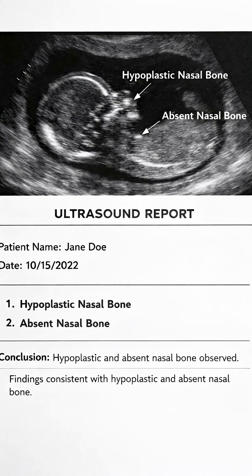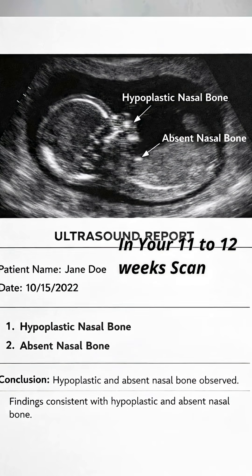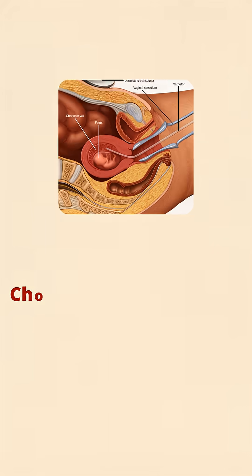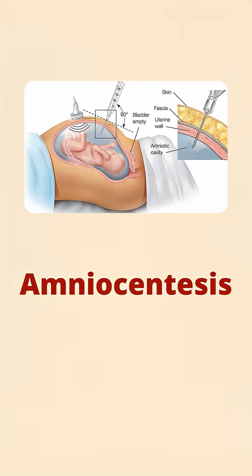Once you see a hypoplastic or absent nasal bone in your 11 to 12 week scan, immediately go for chorionic villus sampling or amniocentesis to know for sure whether the baby has chromosomal abnormalities or not, and then take it forward. Don't waste time.